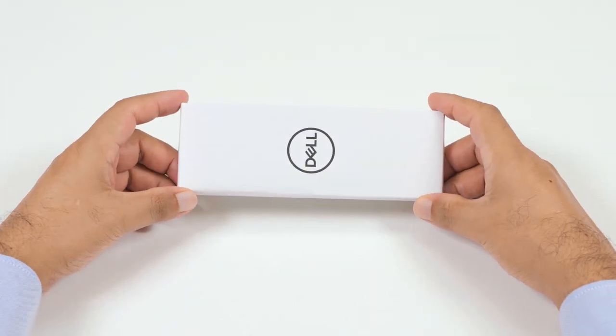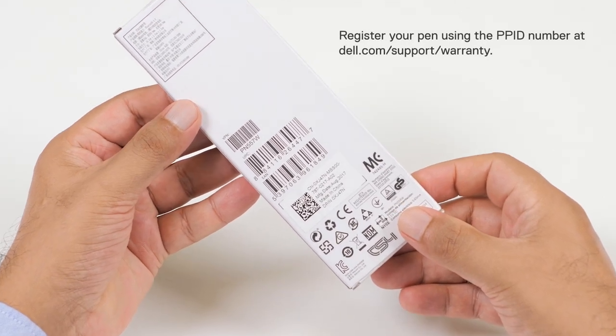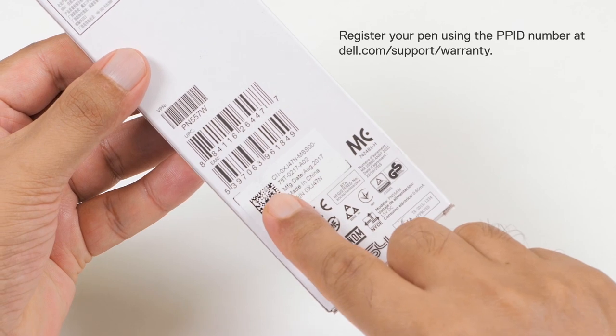Before you begin, on the back side of the box, you'll find the PPID number. This number is used for registering your pen at dell.com/support/warranty.